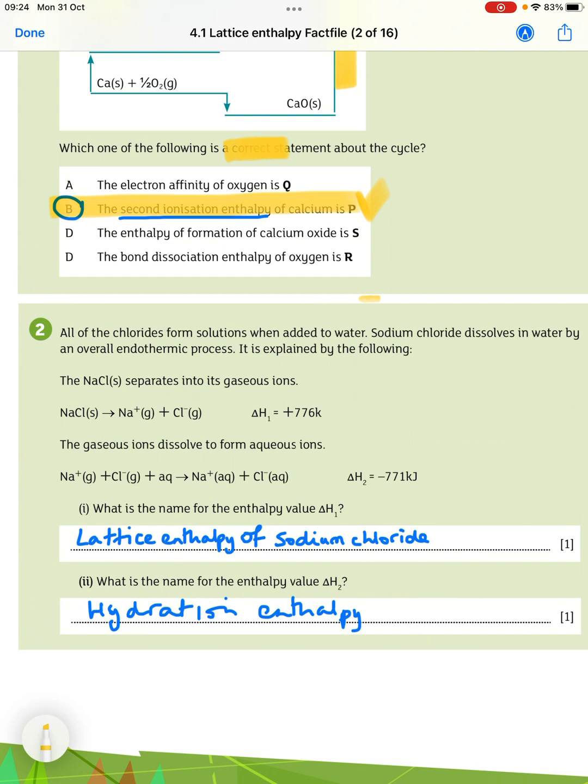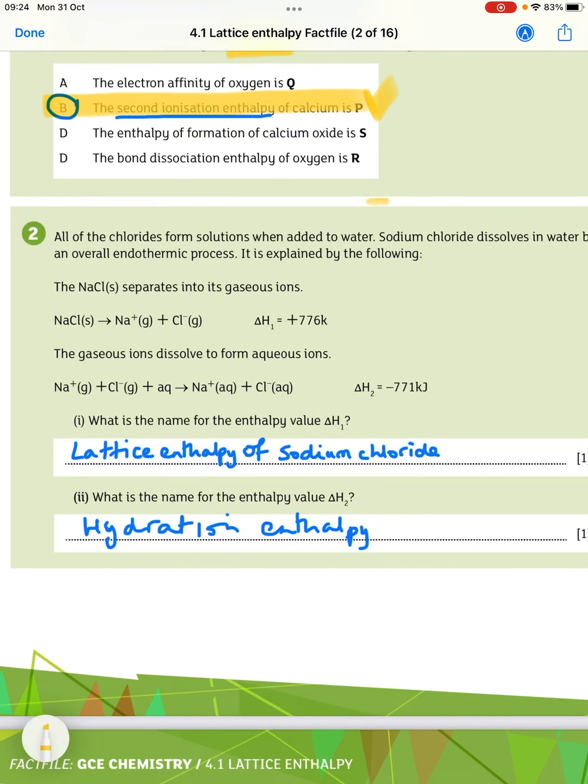And the enthalpy for that reaction is plus 776. So the gaseous ions dissolve to form aqueous ions. And you have Na plus and Cl minus. Plus AQ just represents the water. It gives you Na plus and Cl minus both aqueous. And the enthalpy change for that is minus 771 kilojoules. So what is the name for the enthalpy value delta H1?